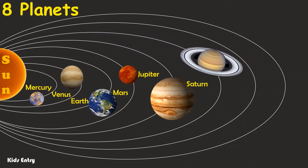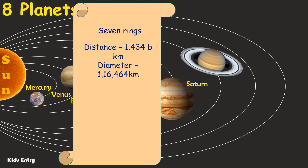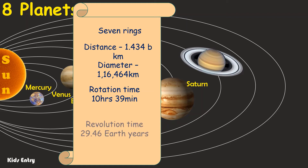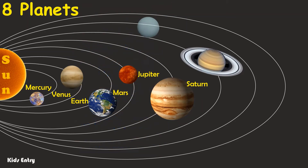Saturn: it has seven rings around it. Its distance from the Sun is approximately 1.434 billion kilometers. Its diameter is 116,464 kilometers. One day on Saturn lasts 10 hours, 39 minutes. One year on Saturn lasts 29.46 Earth years.